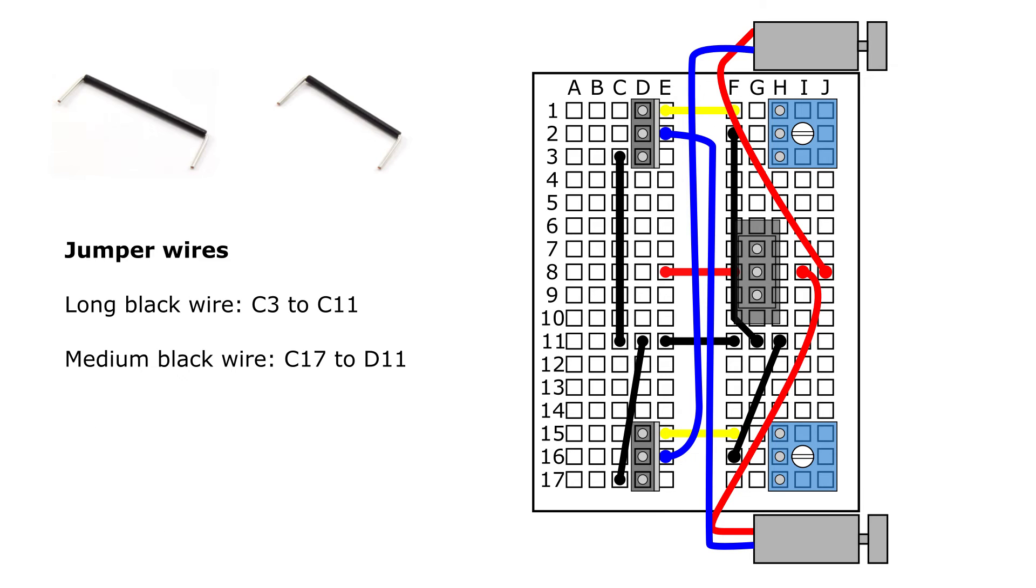Next, you're going to connect two more jumper wires. You're going to connect one of the long black wires from C3 to C11, and a medium black wire from C17 to D11.